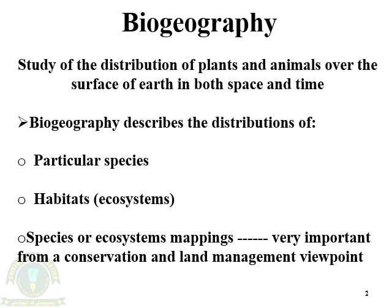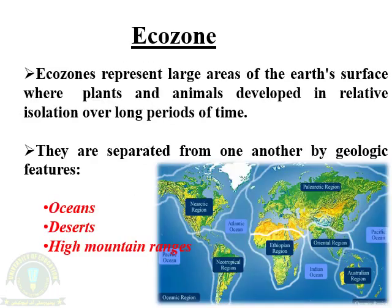The study of species and their ecosystems is very important from the conservation and land management viewpoint. An ecozone or biogeographical realm represents large areas of the earth's surface where animals and plants developed in relative isolation from other species over a long period of time.